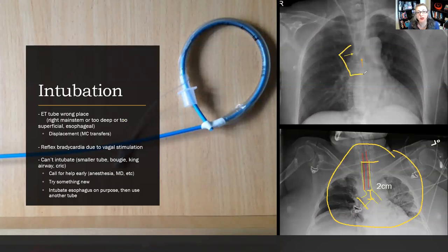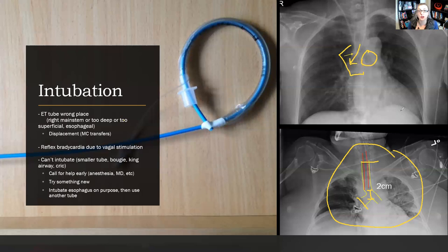Placement could be perfect initially, but the patient could start decompensating after going to CT or being moved — for example, from the EMS stretcher to the bed. This is the most common place the tube gets dislodged. If a patient starts to decompensate after being moved or jostled, checking tube placement should be your very first thought. You can fix right main stemming any day, but if the tube is esophageally placed or not in the trachea at all, you have to restart and re-intubate.